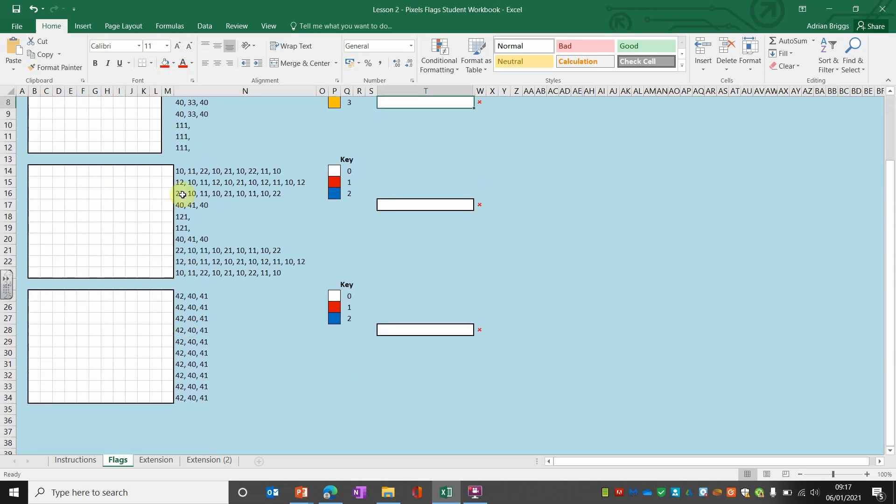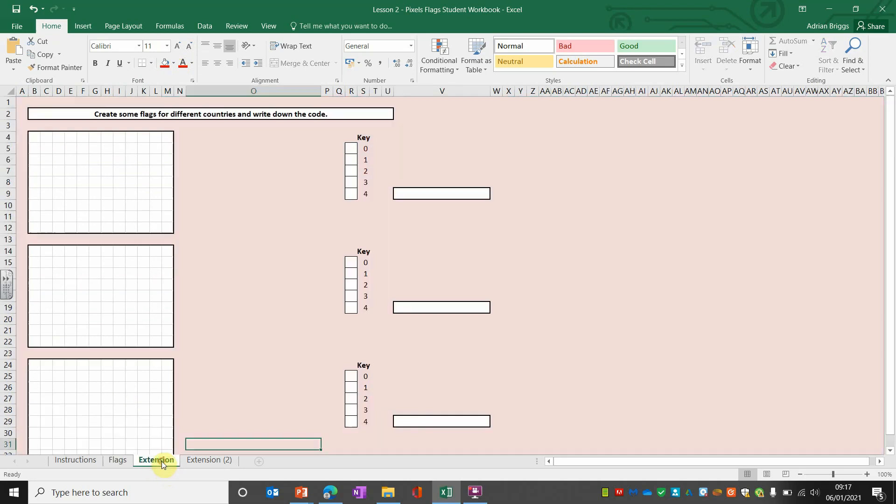You move down—you can see that one's going to be really complicated. That middle one there is an extension as well. It says can you create some flags and could you make the key code and write the metadata. These are the extension tasks if you finish the first two very quickly. The last one says can you draw your initials, fill in the pixels with your initials, and do the code for it and the color key.